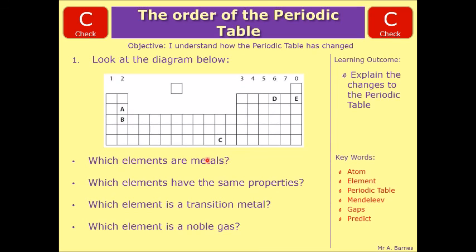So which elements are metals, you need to have all of them, which is A, B and C. So it's everything to the left of this zigzag.